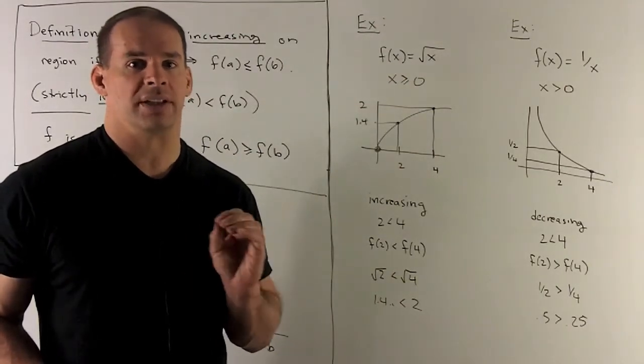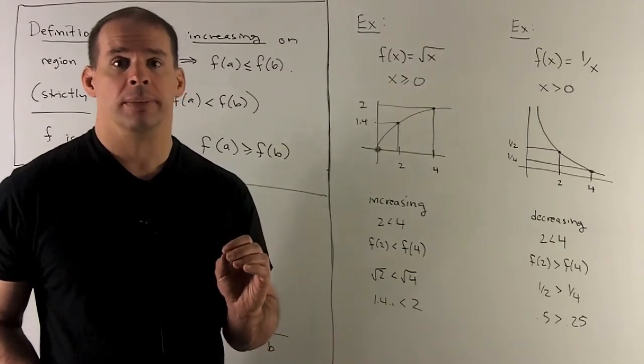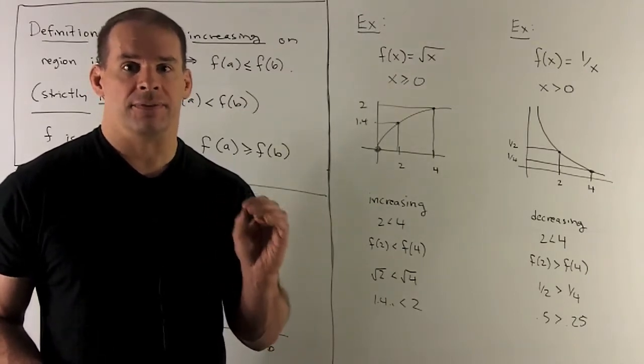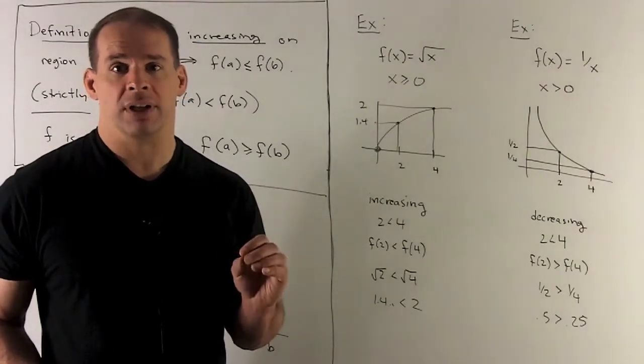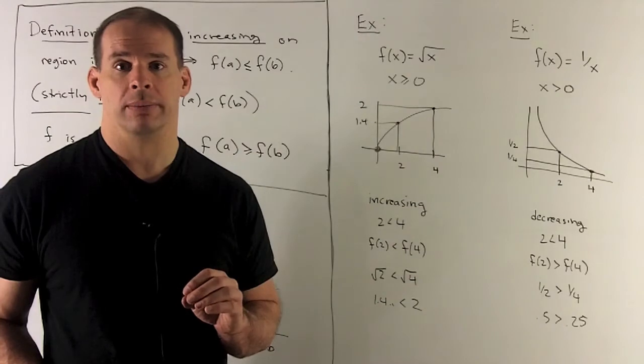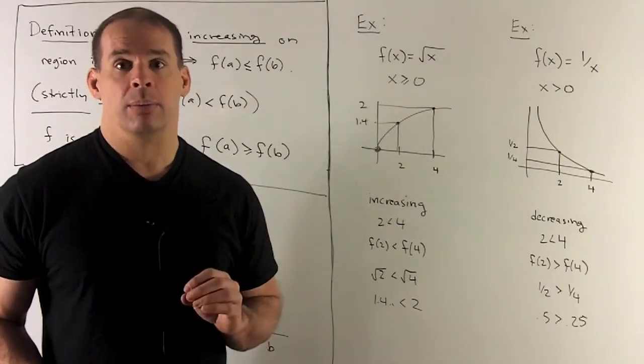Again, if I have 2 less than 4, we apply f. Since we have decreasing, we switch the order. So here I'm going to have f of 2 is bigger than f of 4, or 1 half is greater than 1 fourth. Going to decimal, that's just saying 0.5 bigger than 0.25.